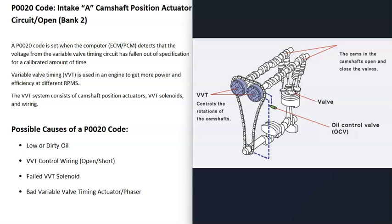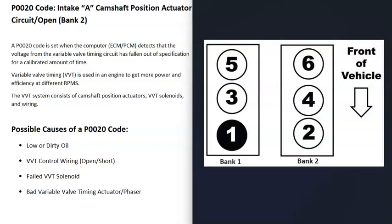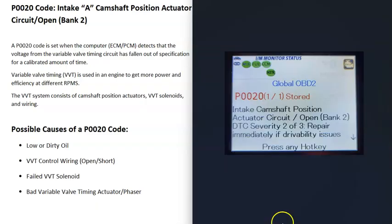Troubleshooting is required to find out why. When you have a V6 or V8 engine you're going to have two banks. Bank 1 is always the side of the engine with the number one cylinder — find the number one cylinder and that's bank 1. The opposite side is bank 2, and bank 2 is the side of the engine that's having the problem with this code.